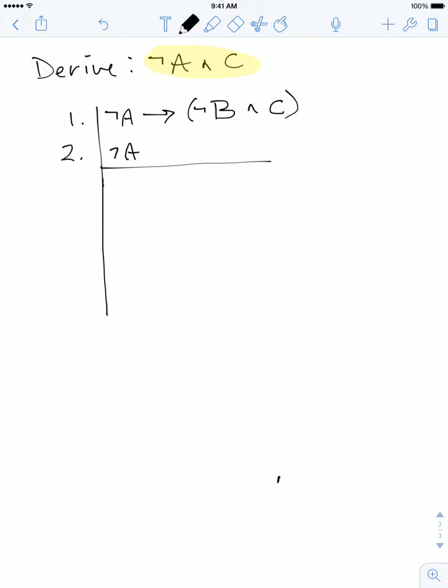Our primary assumptions are these ones here, and what we're looking for is whether the sentence ¬A ∧ C is a component either in the sentence on line one or the sentence on line two. The answer in this case is no. It doesn't appear there.